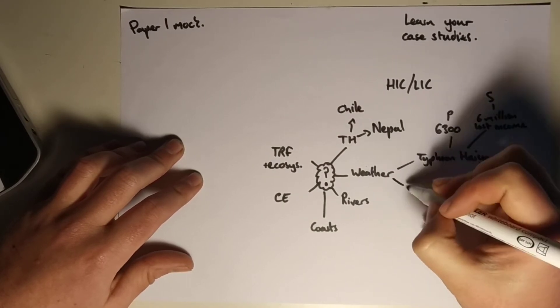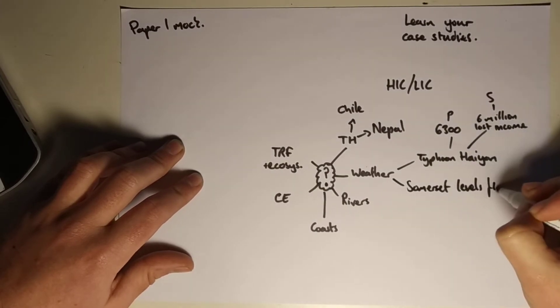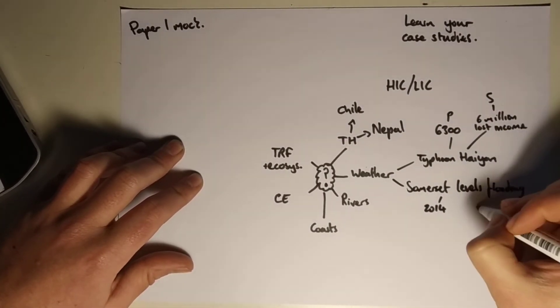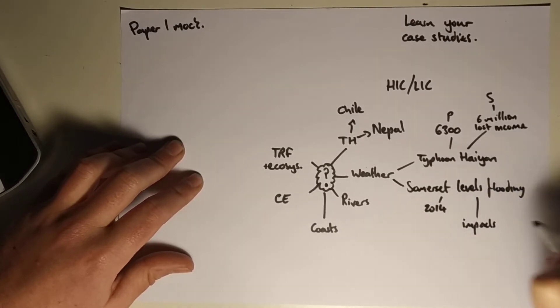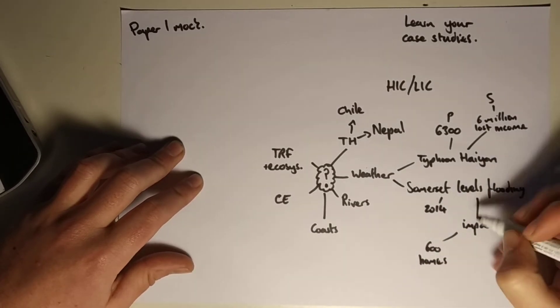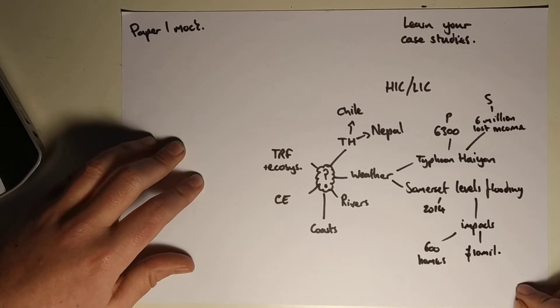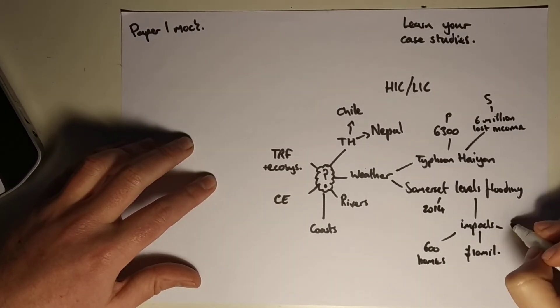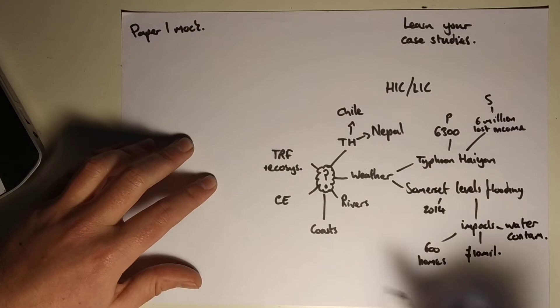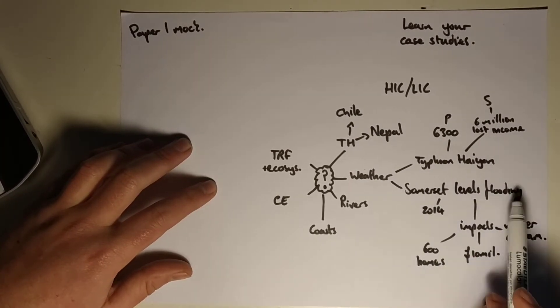Somerset levels floods as well that we learned about in class. Levels flooding which is in 2014. And the impacts of that, this is what's absolutely critical. Impacts of that were 600 homes flooded. 10 million pounds in damages. I'll just put mil in damages. And lots of contaminated water as well. I'll just put water contam. Okay so so far what you need to be thinking about: Tectonic hazards, Chile and Nepal. Weather, Typhoon Haiyan, Somerset levels floods in the UK.